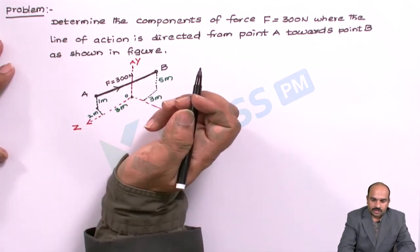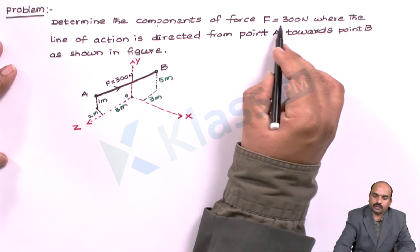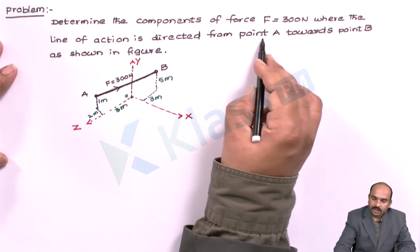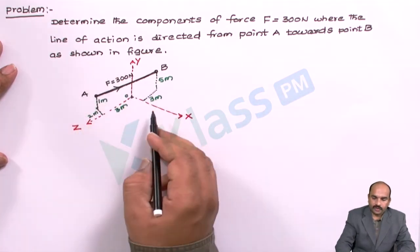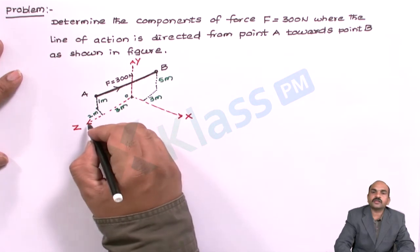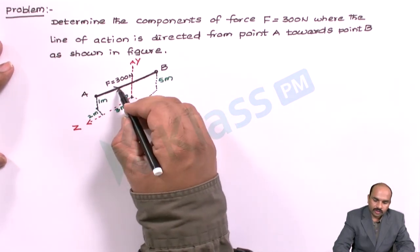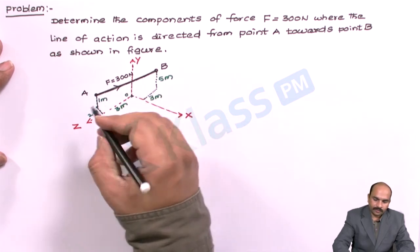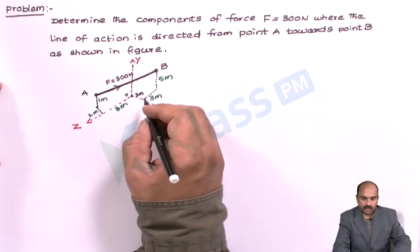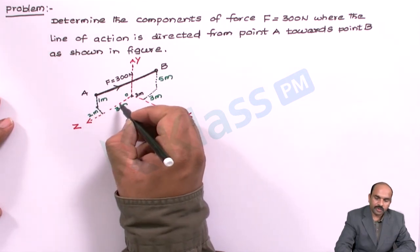Let us take a problem on components in a spatial system. Determine the components of force F equal to 300 N when the line of action is directed from point A towards point B as shown in the figure. The diagram shows an x-axis, y-axis perpendicular to x, and z-axis perpendicular to both x and y. There is a line AB directed from A to B with an arrow mark, and the corresponding distances are given.